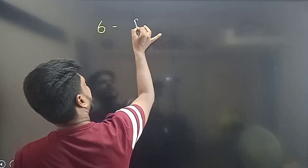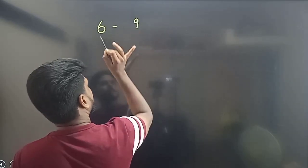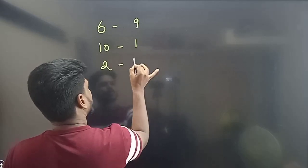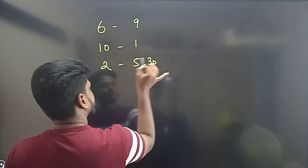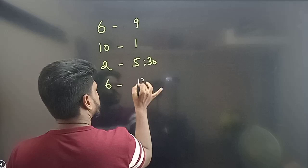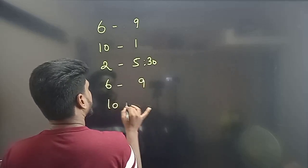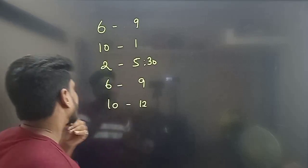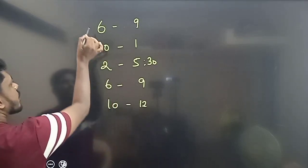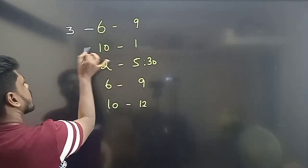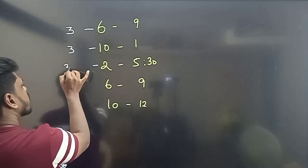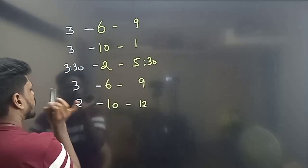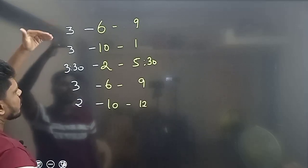Let me calculate the study time. From 6 o'clock to 9 o'clock, that is 3 hours. From 10 o'clock to 1 o'clock, that is 3 and a half hours. From 2 o'clock to 5:30, that is 3 hours. From 6 o'clock to 9 o'clock again, 3 hours. From 10 o'clock to 12 o'clock, that is 2 hours.